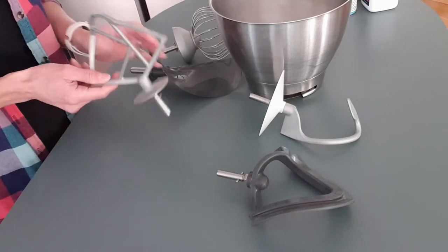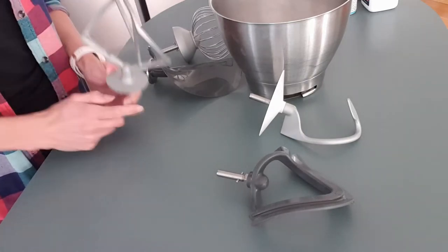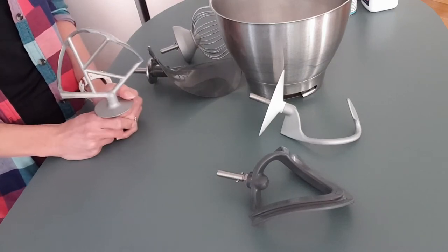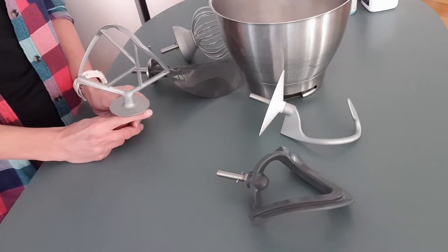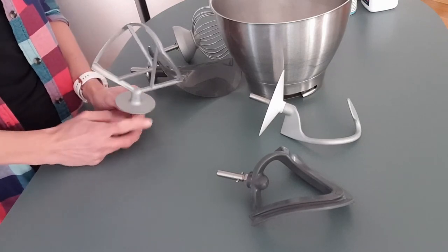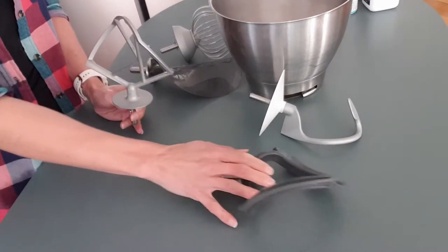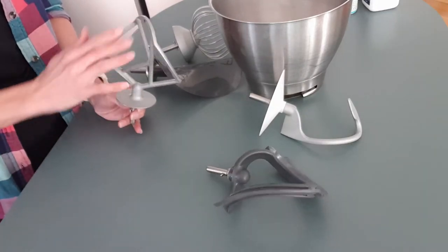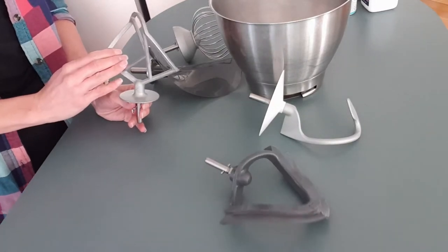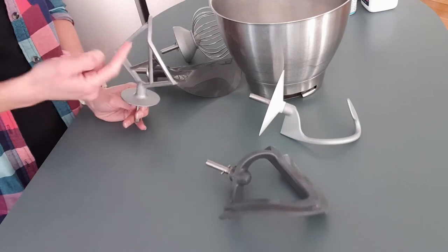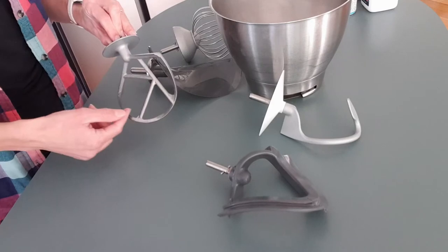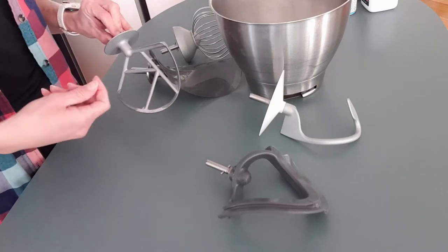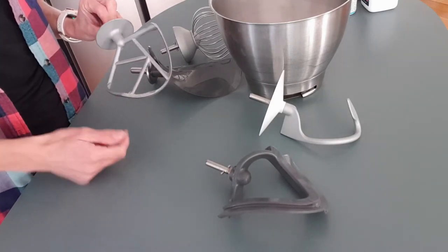Next one's the K beater. Easy because you can see the K. This is used for most other batters, so cake batters, cookie doughs—yes, cookie doughs—and if you don't have the creaming beater, which we'll come to, you can use this for buttercream icing as well. You just have to make sure you keep using your spatula to get the clumps that will stick in there out, so that your batter or your icing will be consistently mixed.